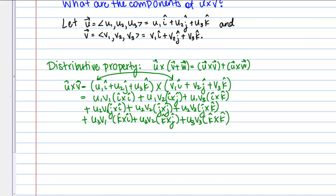So we're going to clean this up a little. The first thing we can realize is that i cross i, j cross j, and k cross k are all going to give us zero vectors. So I'm going to just go ahead and cross out the three terms that have that. And then let's look at what we have left over.